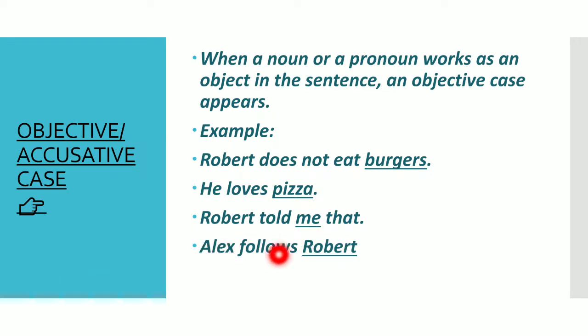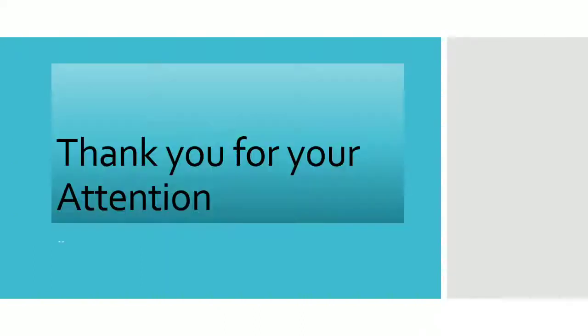'Alex follows Robert' — Alex is the doer of the action, so it is the subject and becomes the subjective case. Robert is receiving the action, so it is the object and becomes the objective case. These are the two cases — subjective and objective — and they are easy to understand. Identify the noun or pronoun, determine if it is subject or object, and then identify the case. Thank you so much for your attention.